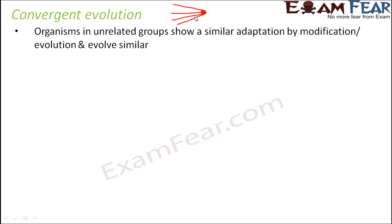Here also the same thing is happening. Organisms from unrelated groups — like a bird, an insect, or a terrestrial animal — are not related to each other, but they similarly adapt just for their survival in the environment. They adapt in similar ways, and that's how they evolve in similar ways. So that is called convergent evolution.